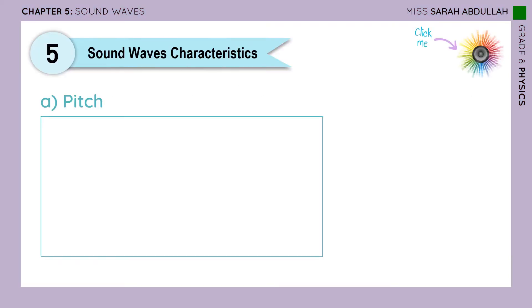We know from before that sound waves are mechanical waves. Mechanical waves have characteristics like the period, amplitude, frequency, wavelength, and wave speed. Sound waves do have these characteristics, but they also have other characteristics which are related to those.